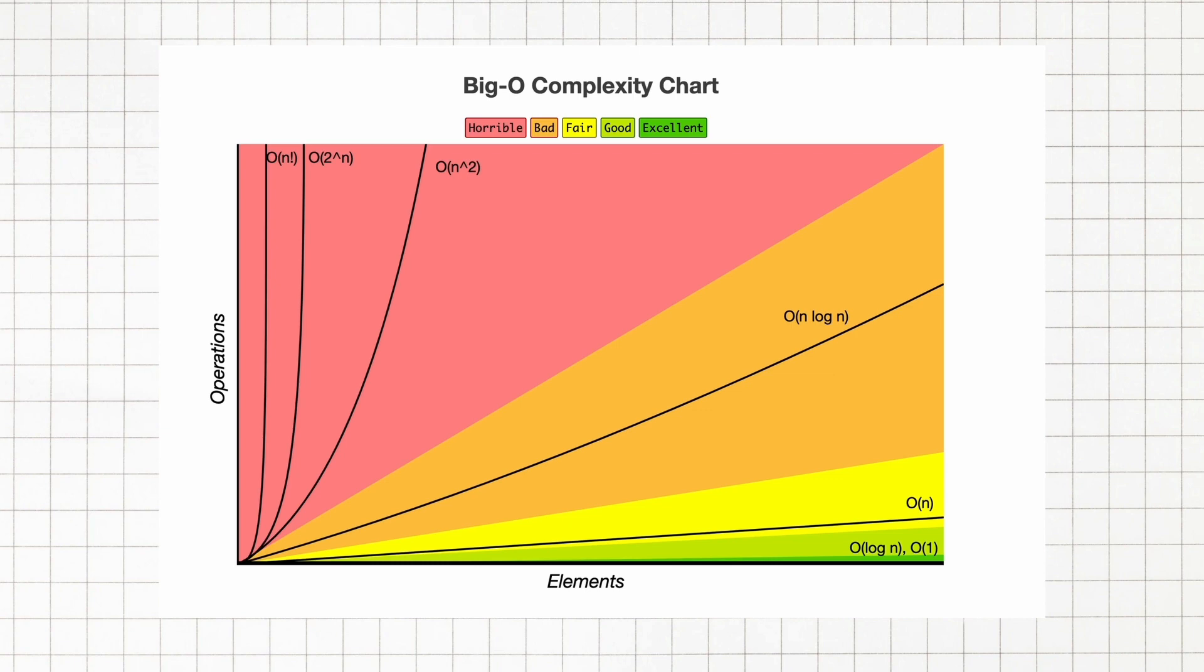When we talk about Big O and scalability of code, we simply mean when we grow bigger and bigger with our data, how much does the algorithm slow down. As the list of elements in the input increases, how many more operations do we have to do? That's all it is. And Big O allows us to explain this concept.